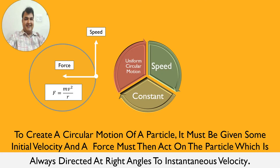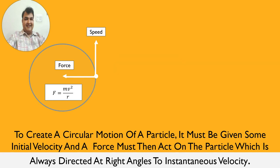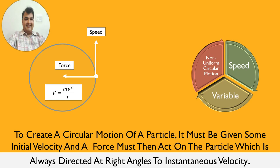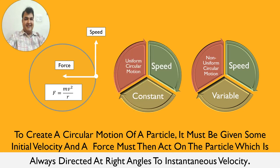We have discussed uniform circular motion. If speed is constant, then it is uniform circular motion. Secondly, we have discussed non-uniform circular motion. If speed is variable, then it is a kind of non-uniform circular motion, isn't it?